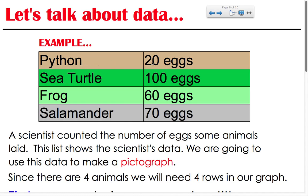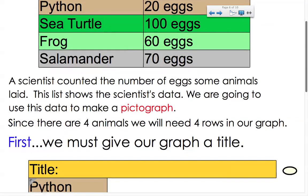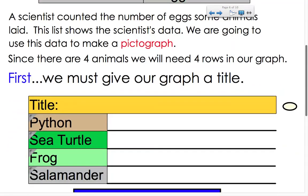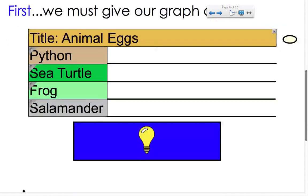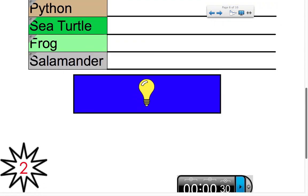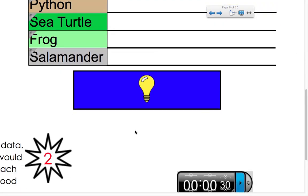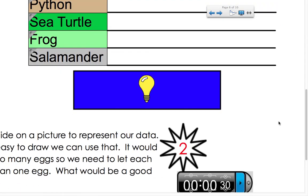So, you can see that a python laid 20 eggs, sea turtle 100 eggs, a frog 60 eggs, and a salamander 70 eggs. Since there are four animals, we will need four rows in our graph. First, we must give our graph a title. So, we would put our title in here, and I'm going to name this one Animal Eggs, since that's what we're looking at.